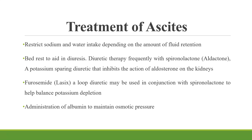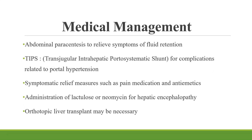Diuretic therapy is frequently used with aldactone, a potassium-sparing diuretic that inhibits the action of aldosterone on the kidneys. Lasix, a loop diuretic, may be used in conjunction with spironolactone to help balance potassium depletion. Administration of albumin helps to maintain osmotic pressure.